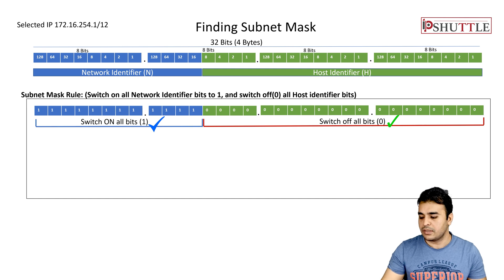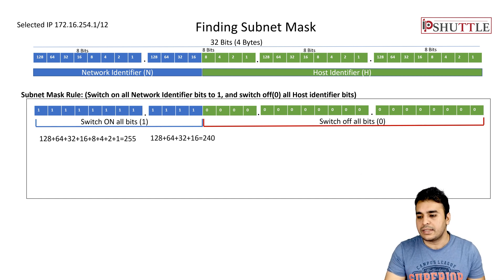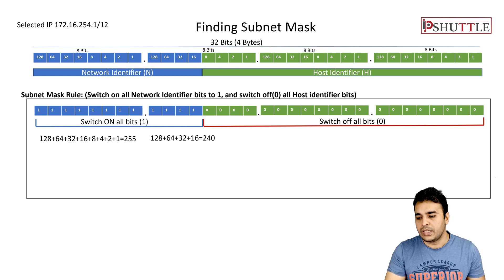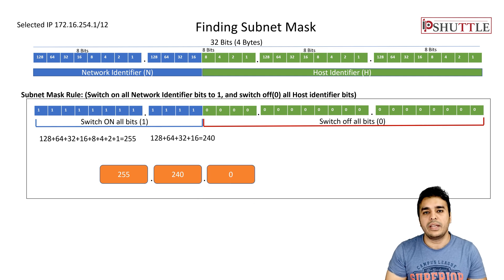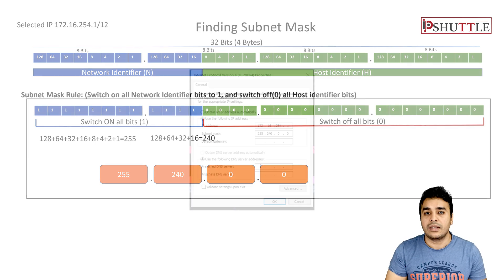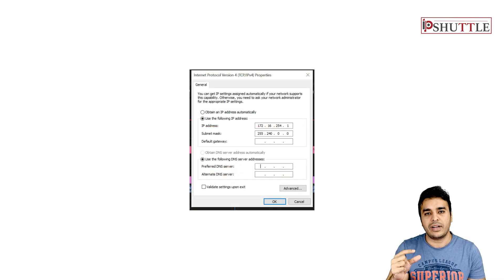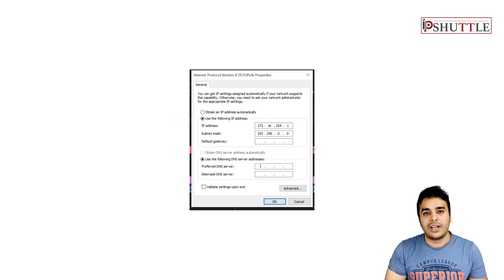Going to the decimal notation: for the first octet, all 8 bits are on — 128+64+32+16+8+4+2+1 = 255. The next octet has 4 bits on — 128+64+32+16 = 240. So your subnet mask is 255.240.0.0. This is the subnet mask you will need when assigning an IP address to a machine. When you see three columns — IP address, subnet mask, and default gateway — the subnet mask identifies how many bits are going to be the network identifier.